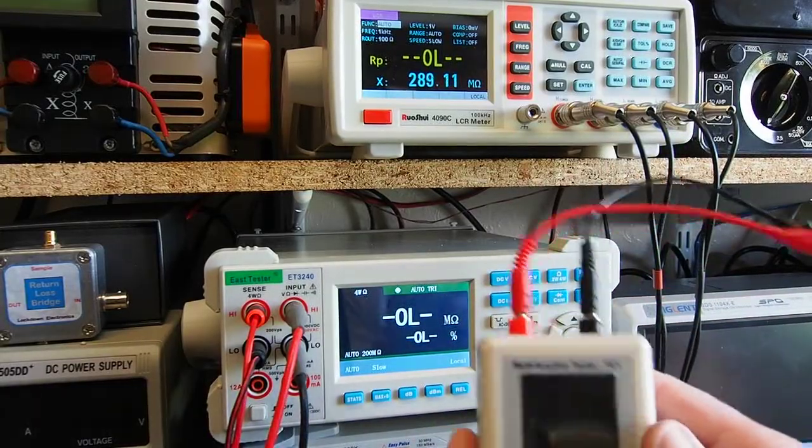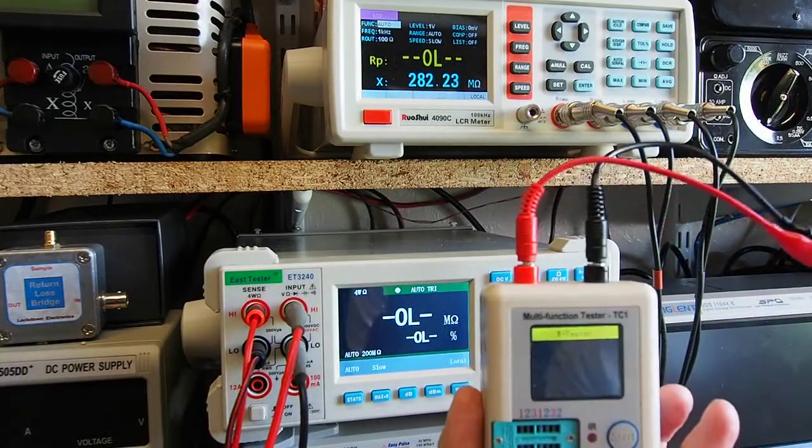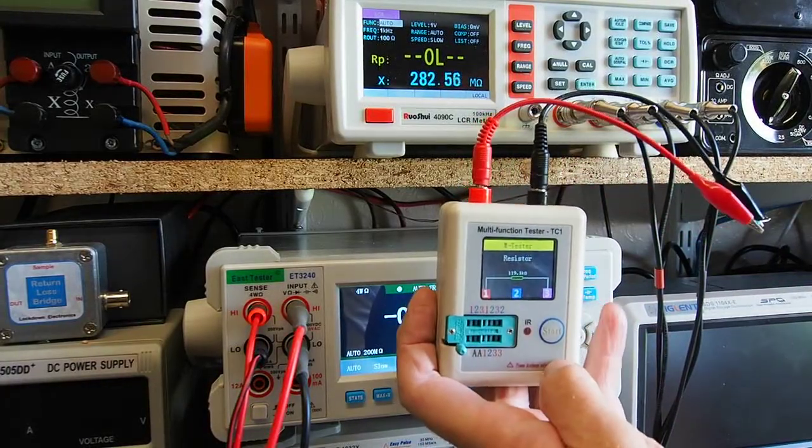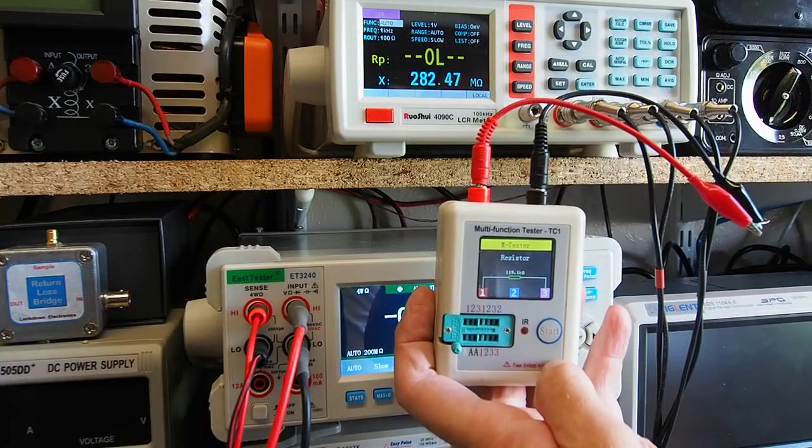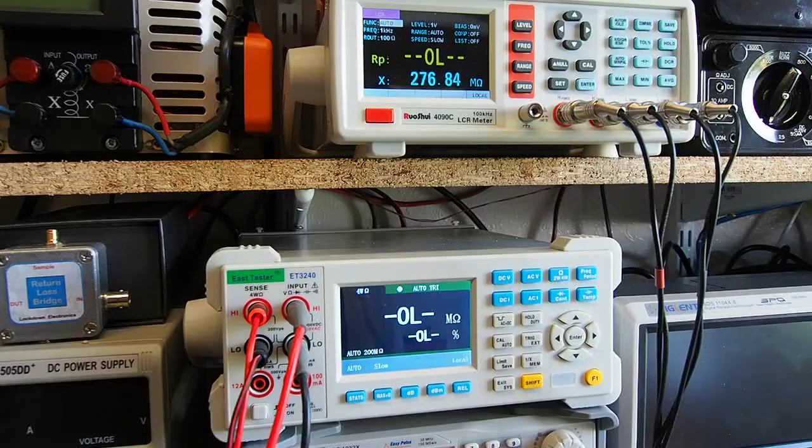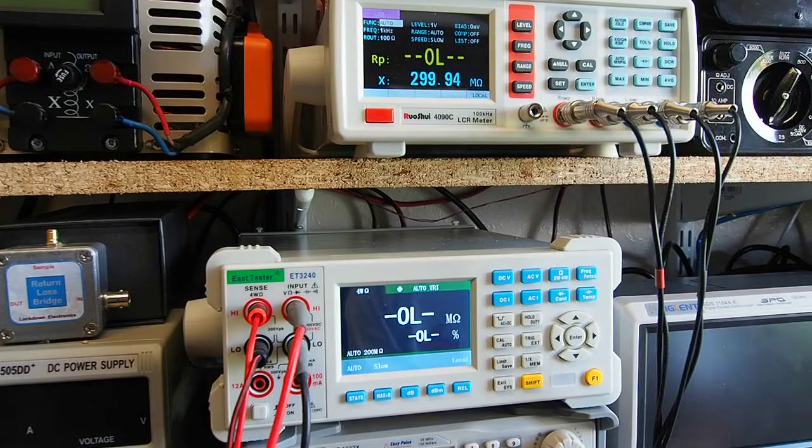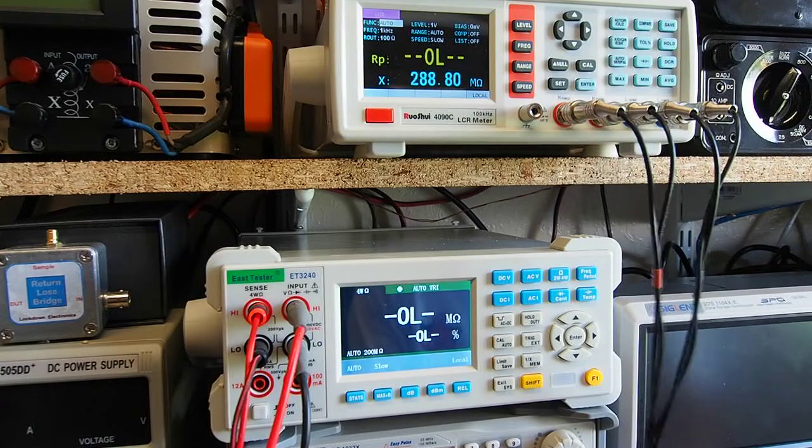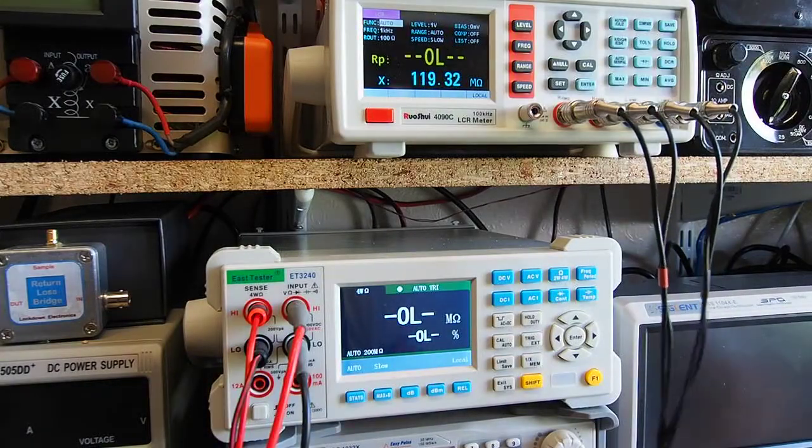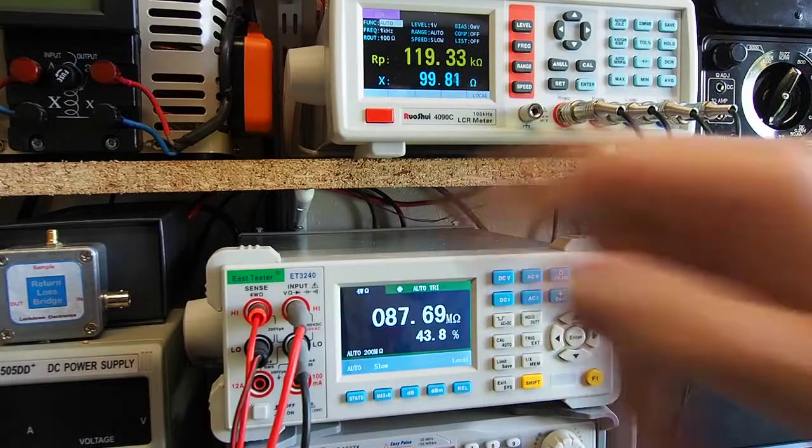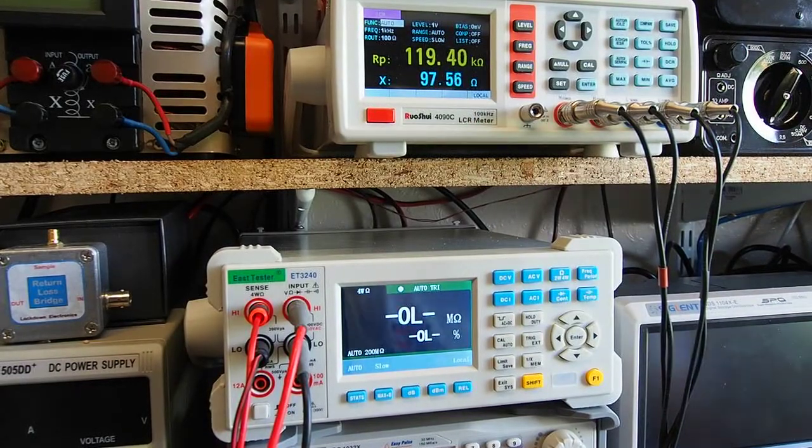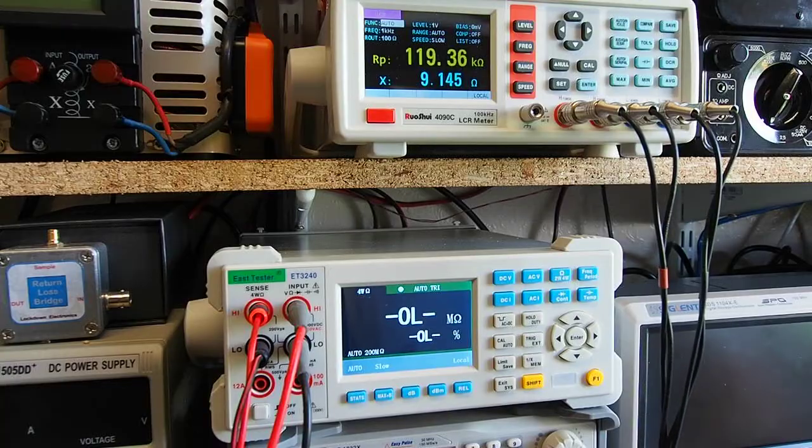Next we'll have a look at resistance. I've got a pretty middle of the road in terms of value resistor there, let's see what the tester makes of it. So that's saying 119.1k, so I reckon that's supposed to be a 120k resistor, certainly well within its 10% tolerance. Let's just pop that onto the LCR meter. That's saying 119.3k, so that's within a couple of hundred ohms, so can't fault it in mid-range.